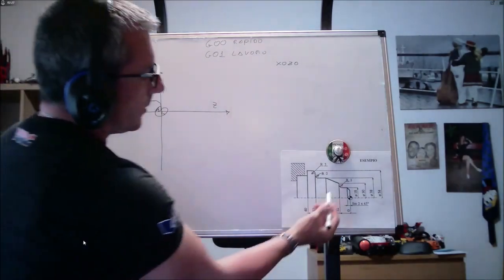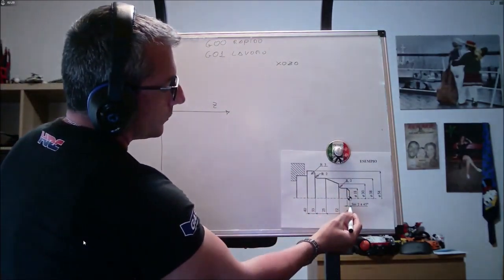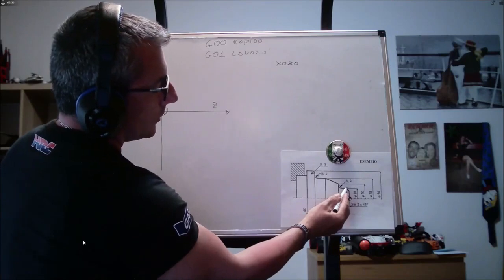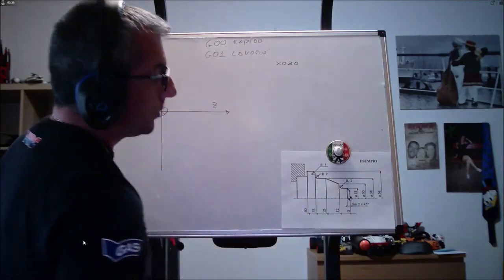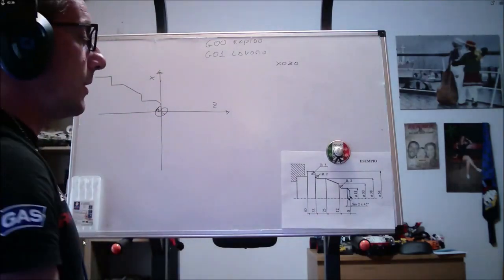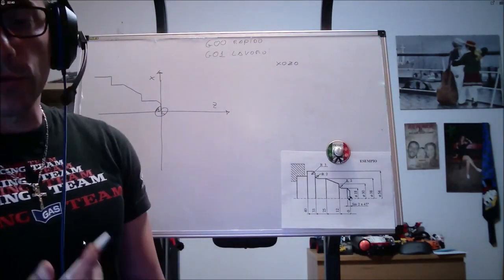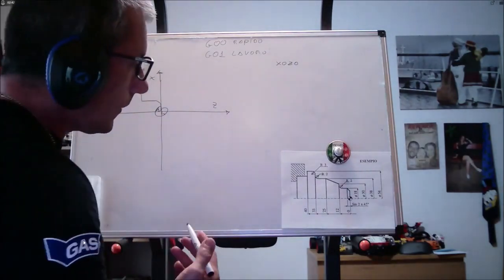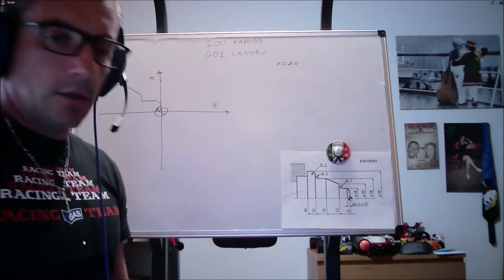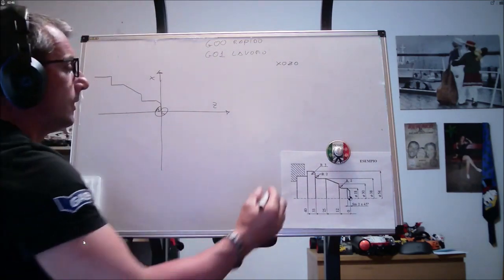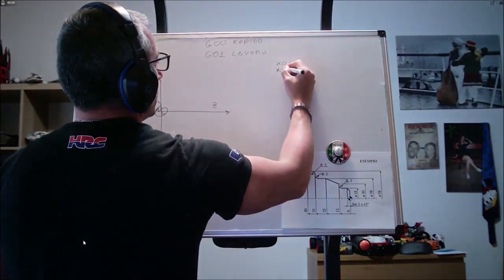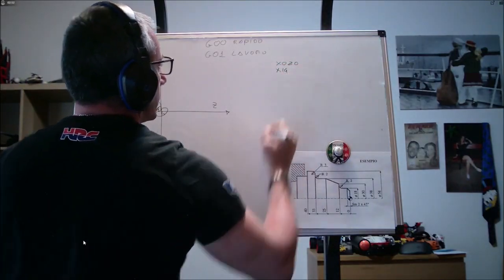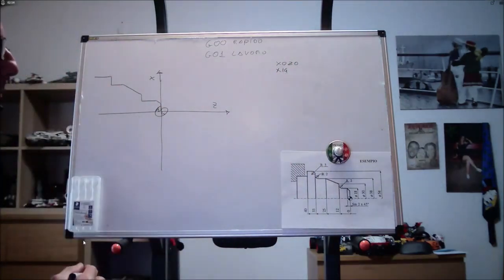Dopodiché, dobbiamo portarci qua. Questo smusso è 2x45 gradi, quindi questo è un triangolo formato da due lati da 2 mm. Vorrebbe spontaneo dire, bene, io adesso salgo a X 16, 18, meno 2. In realtà, io salgo a X 14.